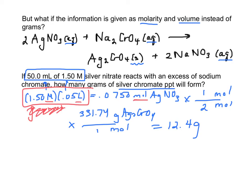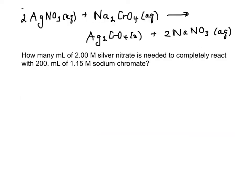So let's look at one more that's a little bit different, but pretty similar. So same equation. But now it says how many milliliters of 2 molar silver nitrate is needed to completely react with 200 milliliters of 1.15 molar sodium chromate?